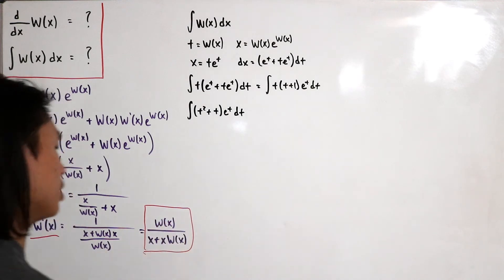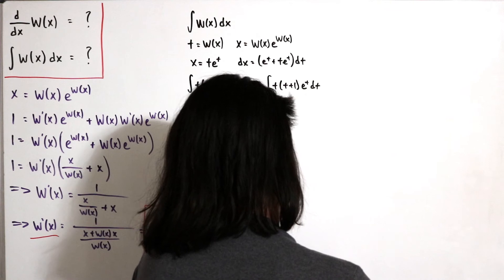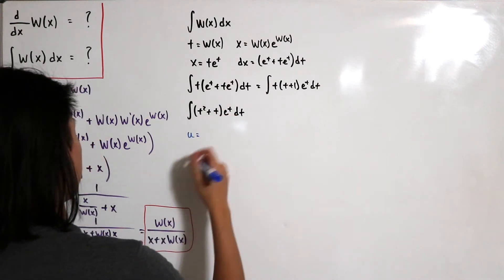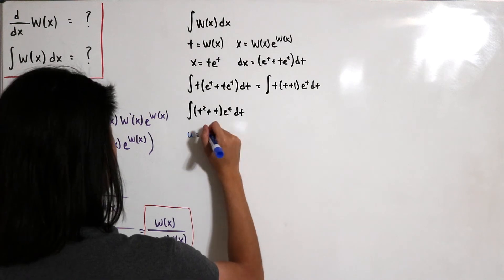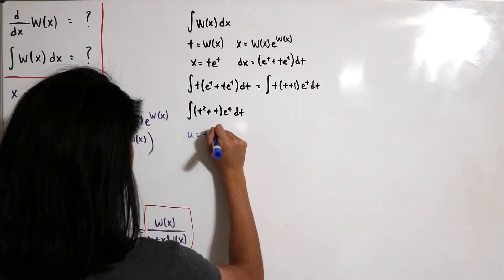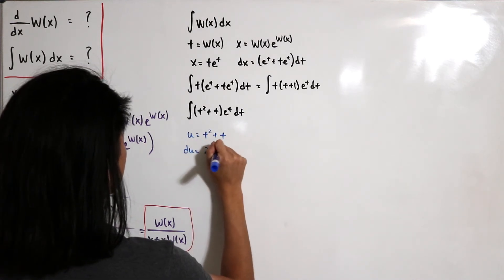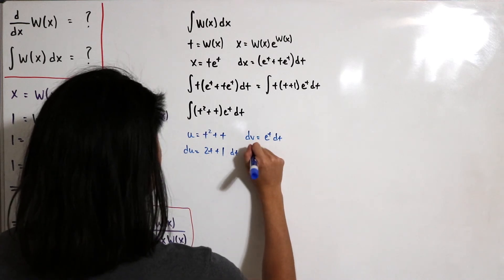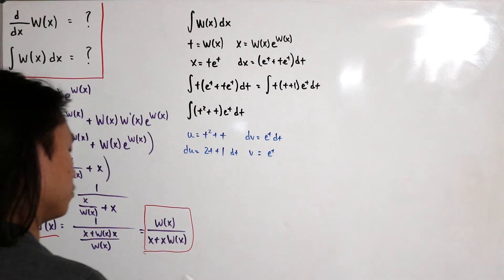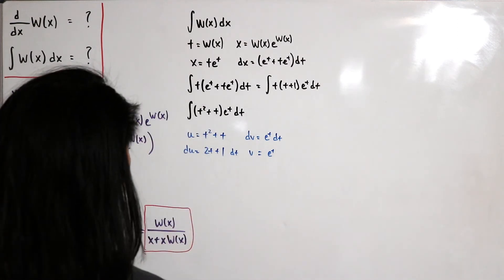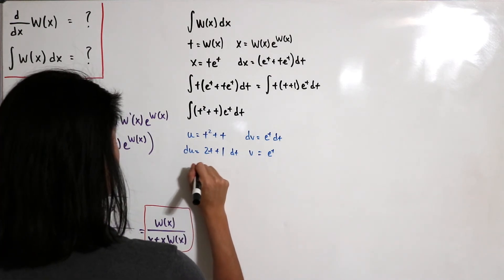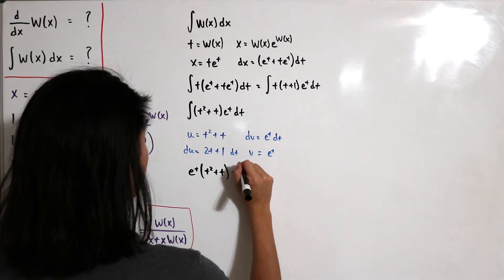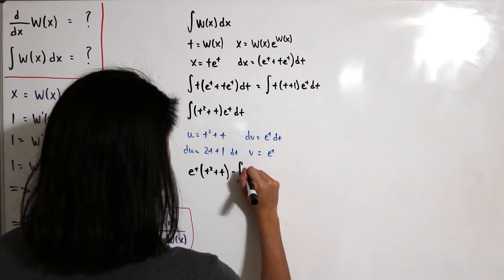We apply integration by parts. Let u = t² + t, so du = (2t + 1) dt, and let dv = eᵗ dt, so v = eᵗ. By the formula u·v − ∫v du, we get eᵗ·(t² + t) minus the integral of eᵗ·(2t + 1) dt.